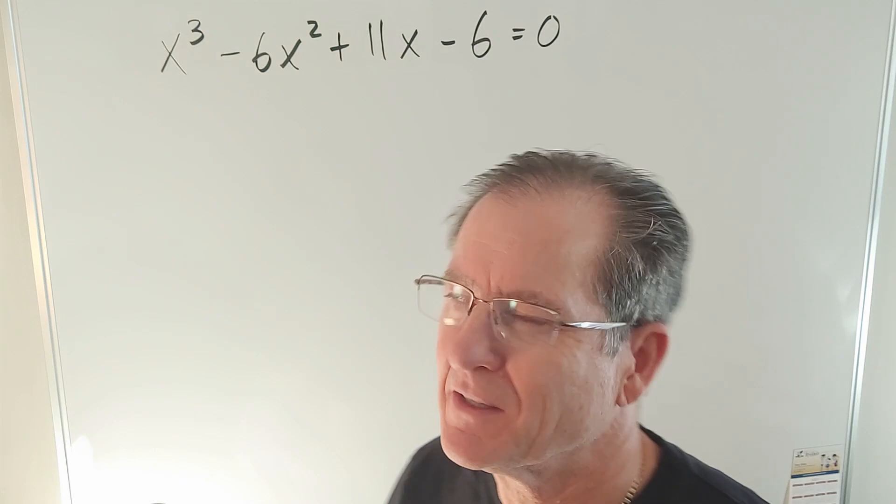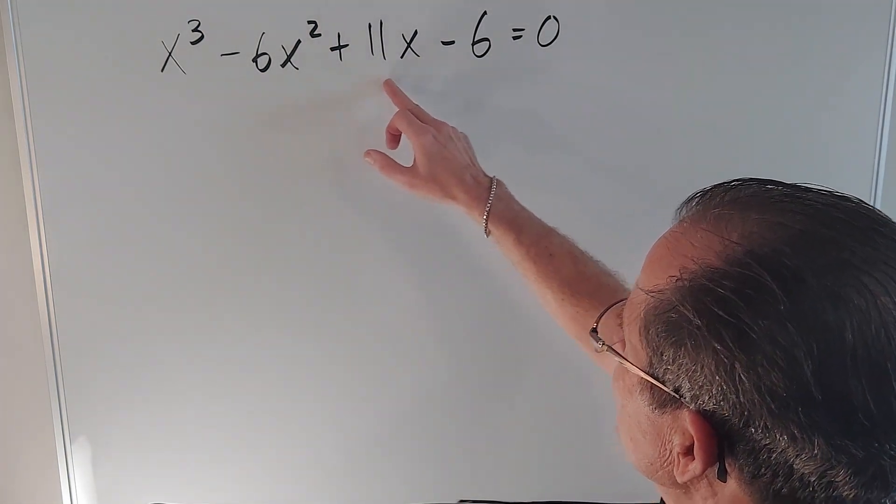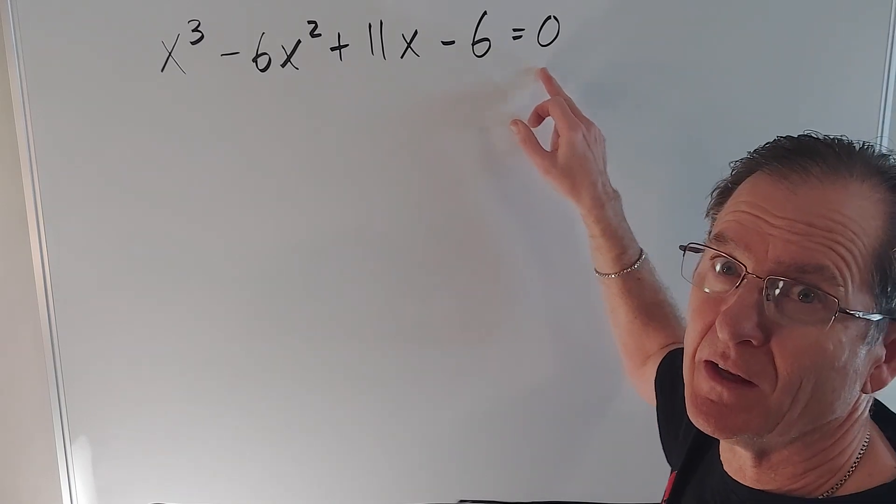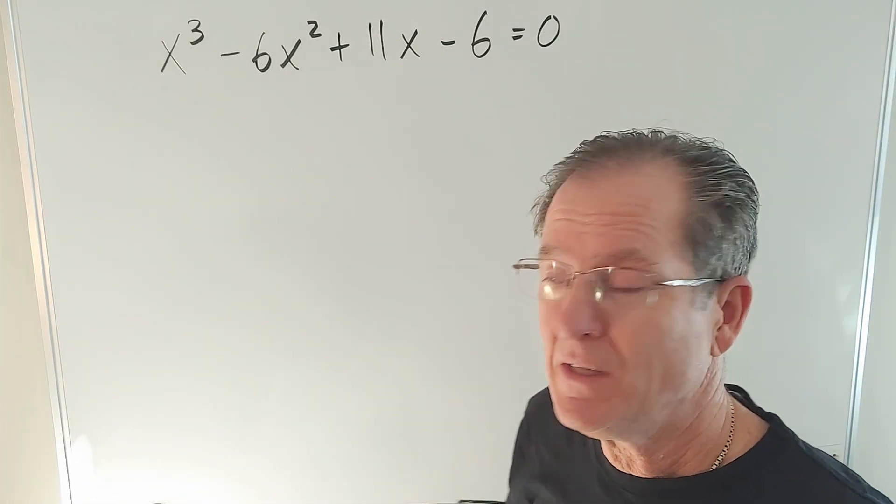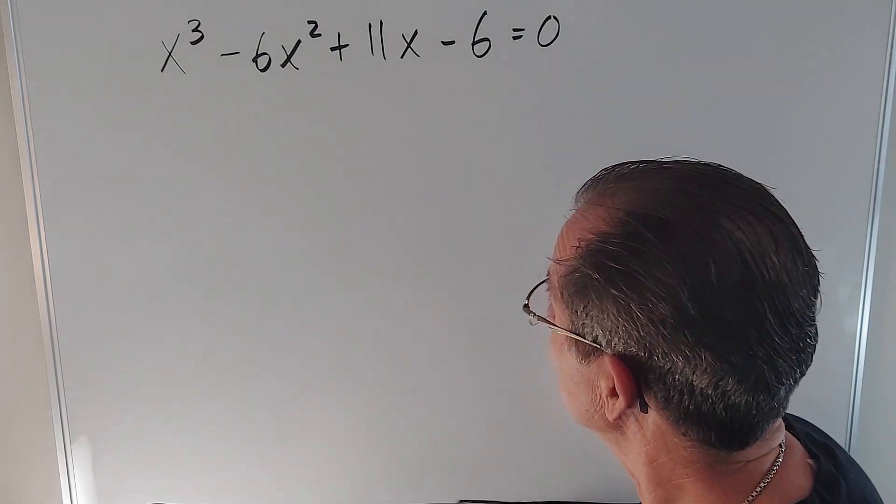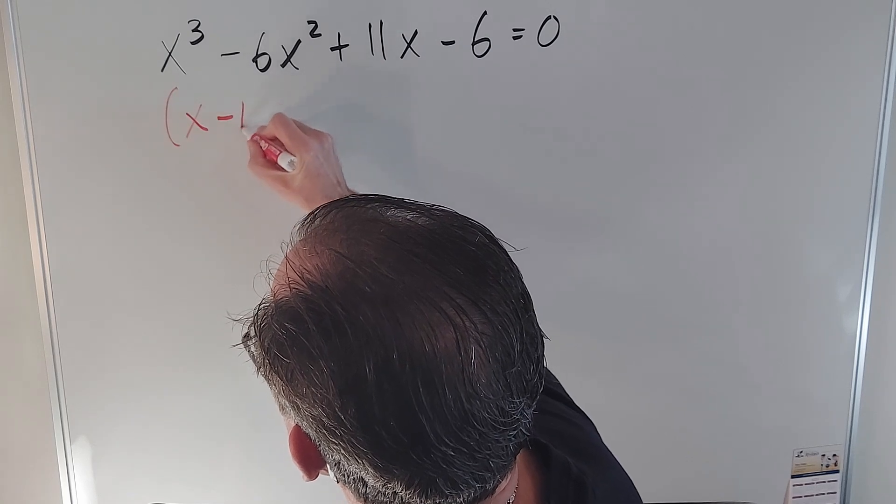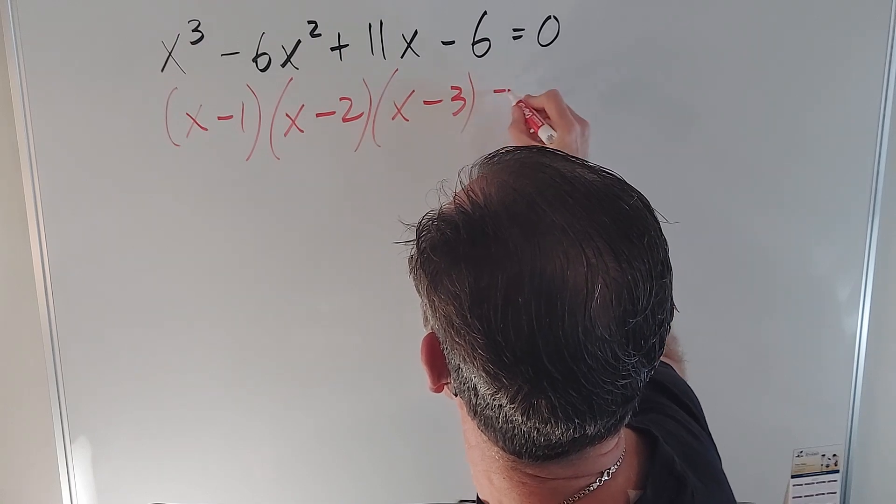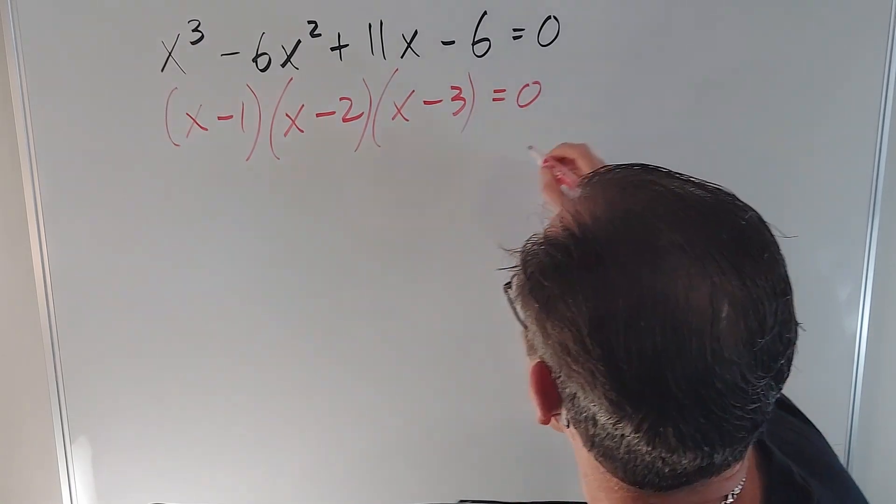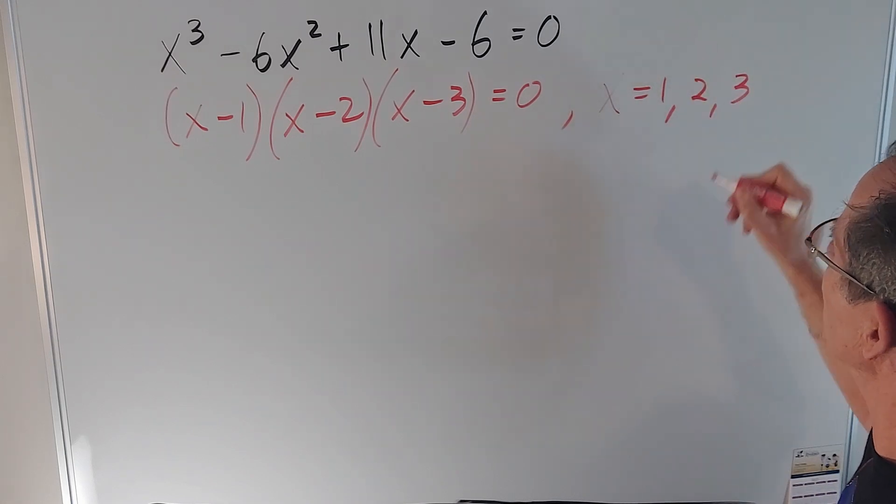Now let's look at this cubic: x cubed minus 6x squared plus 11x minus 6 equals 0. We mentioned this one in my first cubic formula video. It turns out that it's easily factored into x minus 1, x minus 2, and x minus 3. So we can see that the roots are x equals 1, 2, and 3.